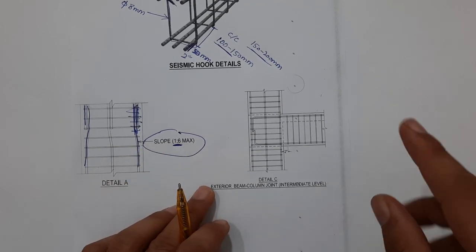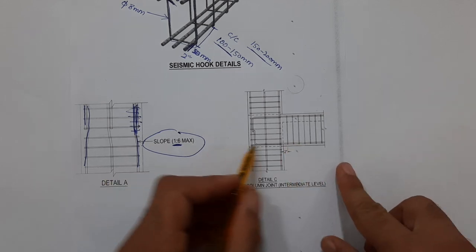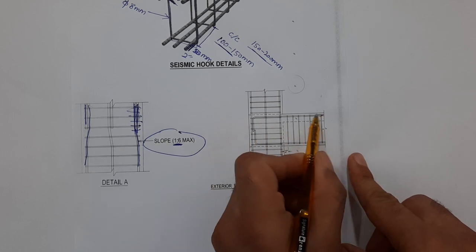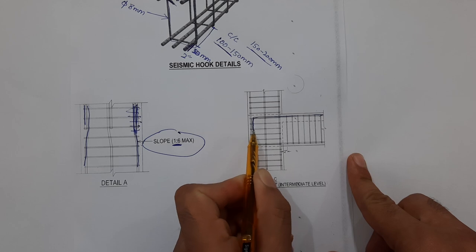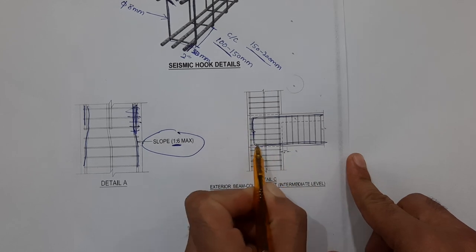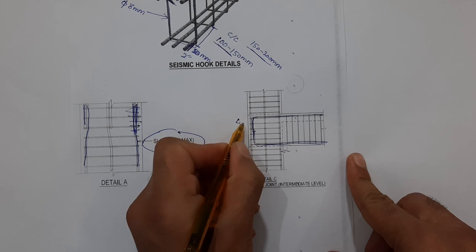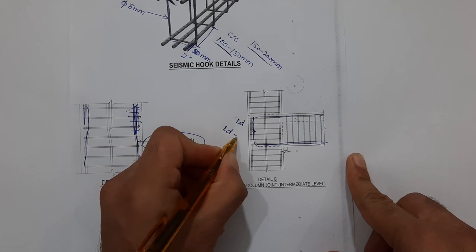The last one is exterior beam-column joint on intermediate level. As you can see, this is the beam. Here you can see development length, and also the bottom is going to the upward side. This is development length Ld.